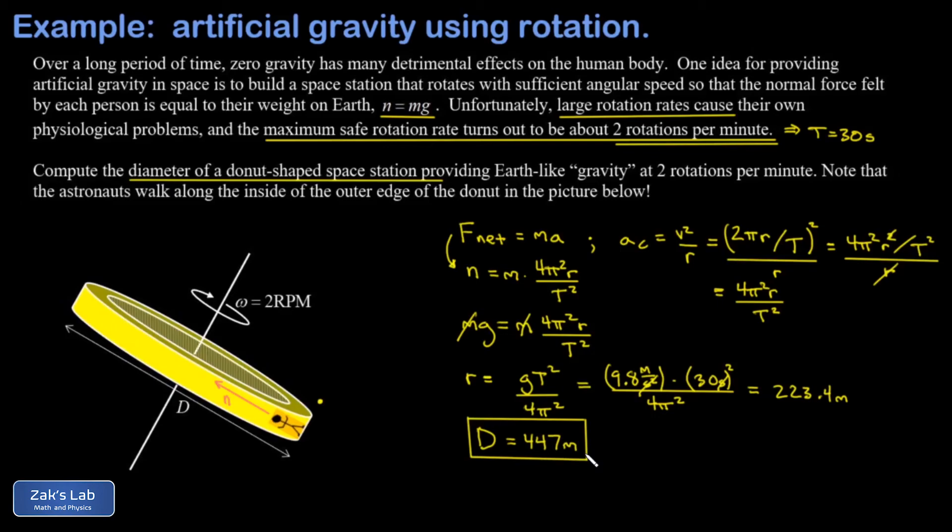You might say it's never going to be practical to build rotating space stations that have a diameter of 447 meters. And certainly, that's not a practical way to travel to Mars right now.